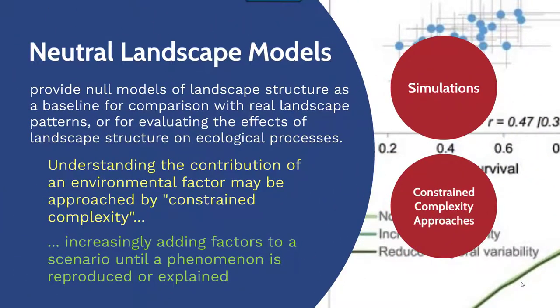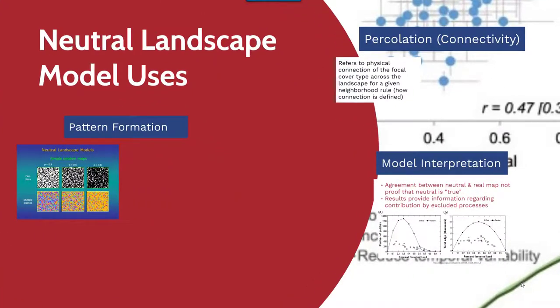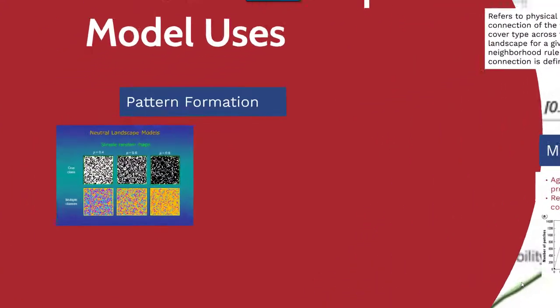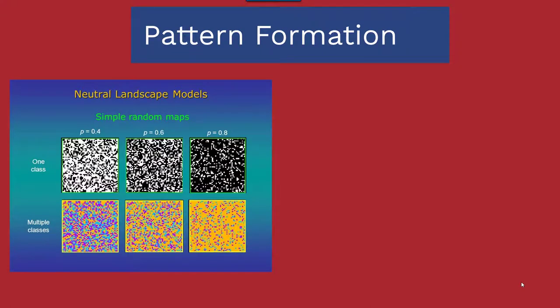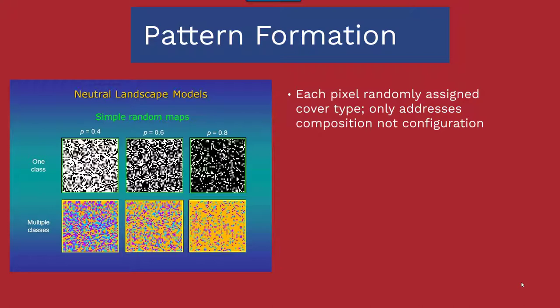As a means of looking at constrained complexity approaches, we have a few different things to focus on. First is pattern formation, for which we use a simple random model. In this model, each pixel in the figure — on the top set of figures we have only one cover type, on the bottom we have multiple classes of vegetation — but each pixel is randomly assigned to a cover type. The top one will be presence/absence, as opposed to the bottom which will have assignment to a specific cover type, and it only addresses composition — the simple model doesn't deal with configuration.